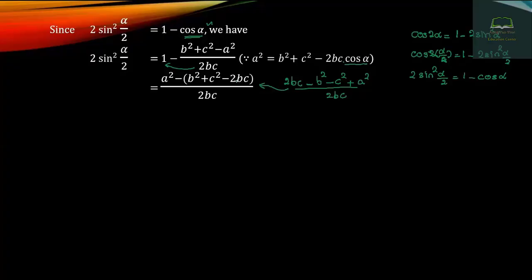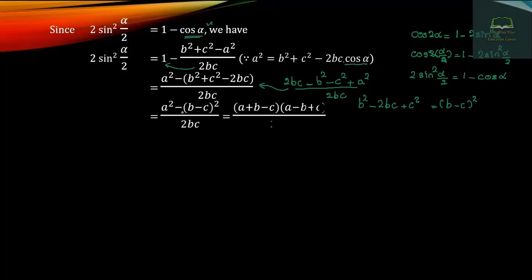Plus C squared minus 2BC, rather than A squared minus 2BC plus C squared.